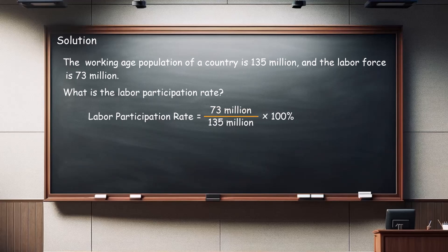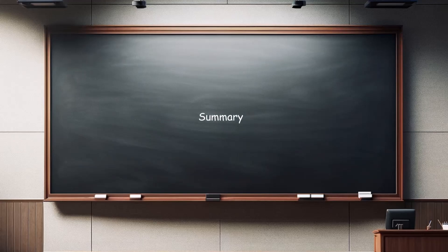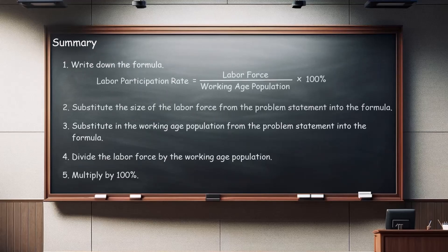Fourth, divide 73 million by 135 million. Rounding to two decimal places gives 0.54. Fifth, multiply by 100%. The labor force participation rate is 54%. By following these steps, you can calculate the labor force participation rate for any country.